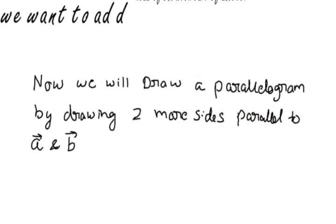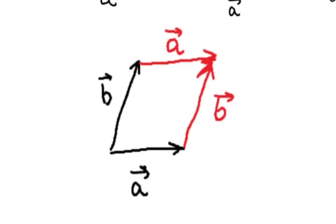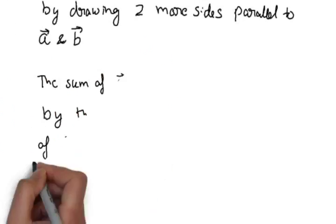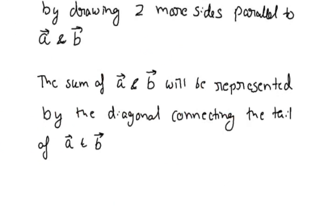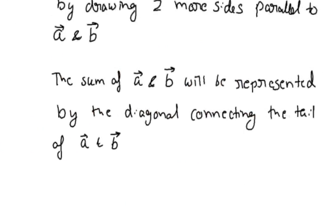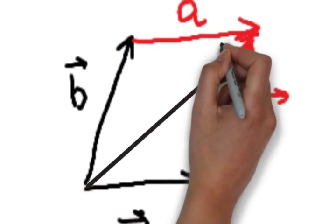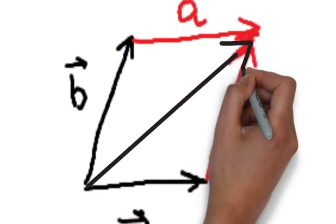Now we will draw a parallelogram by drawing two sides parallel to a and b. The sum of a and b will be represented by the diagonal connecting a and b. We draw the diagonal from the tail of a and b and call it vector c.